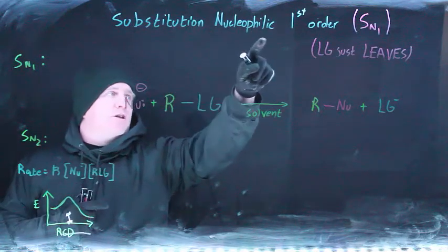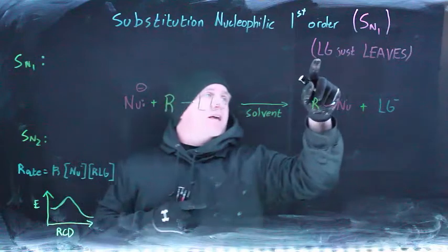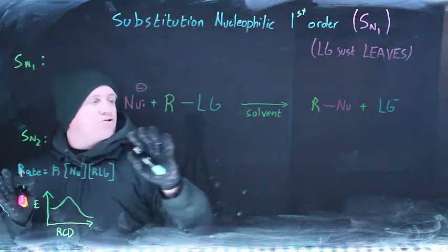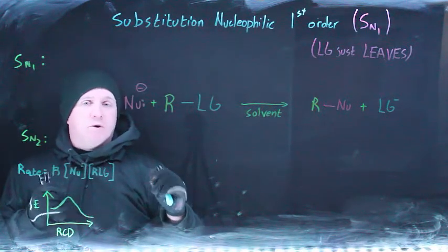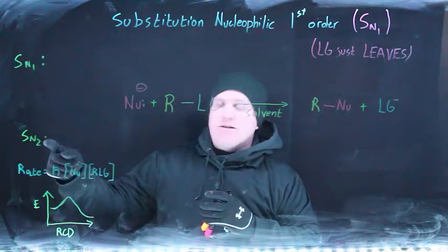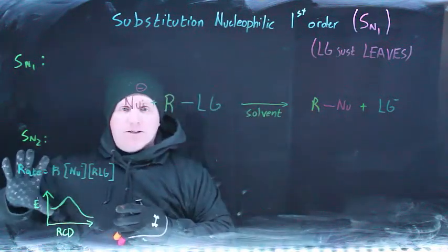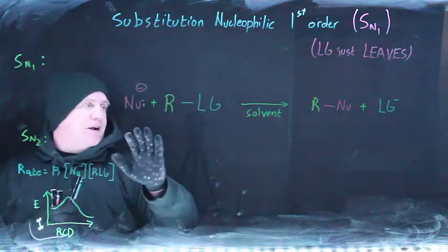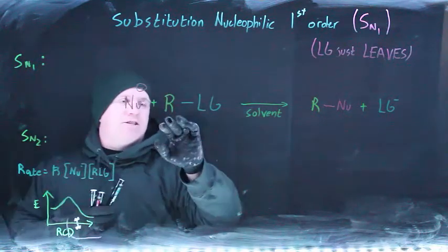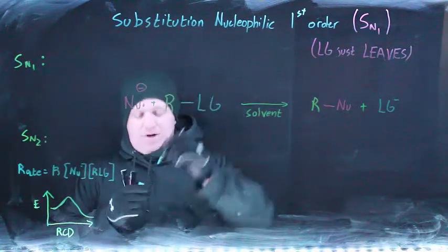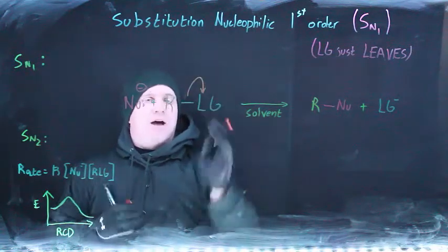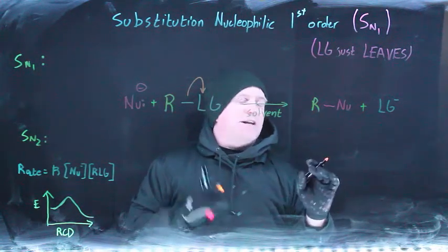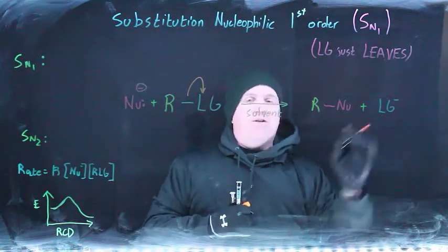The subject of this video is substitution nucleophilic first order SN1 type reactions. The key thing to keep in mind is that the leaving group just leaves. The generic reaction for this process looks nearly identical to the SN2 reaction, with differences in rate, reaction coordinate diagram, and mechanism. But the big picture remains: you have a nucleophile, a substrate with a leaving group, the leaving group leaves, and the nucleophile takes its place.